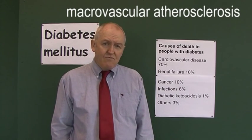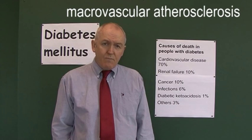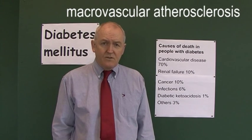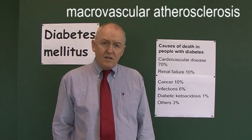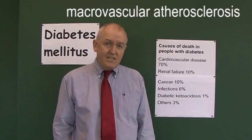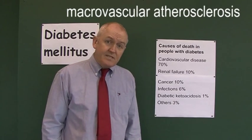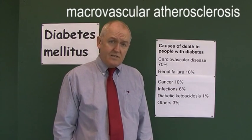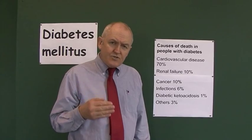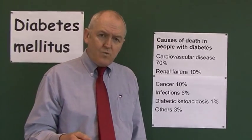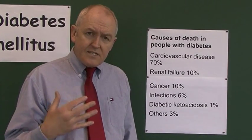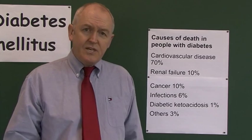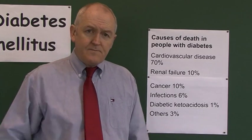They get atherosclerosis. So most patients with diabetes, unfortunately, die from cardiovascular disease — probably about 70% of them. But if we can control the diabetes well, and if we can recognise it at an early stage, we can delay this process.